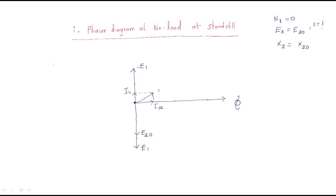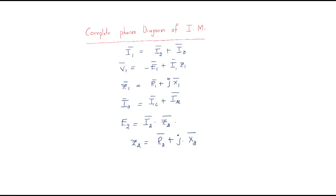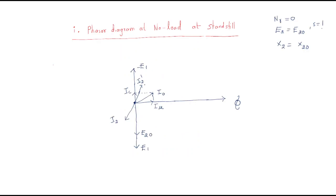The combination of I_mu and IC gives the no-load current I0. The EMF e2-naught generates the current I2, and on the stator side this appears as the opposite current I2-dash. The combination of I2-dash plus I0 gives the stator current I1.